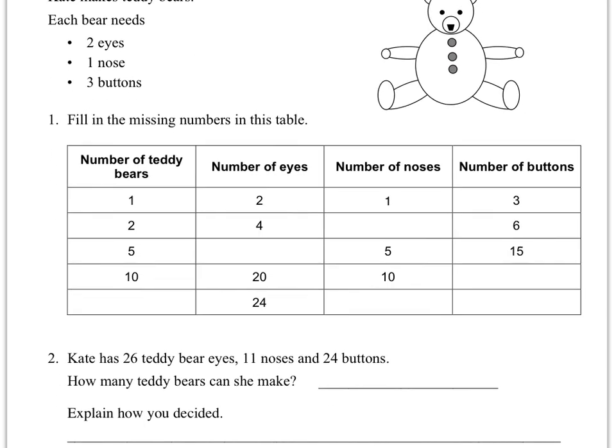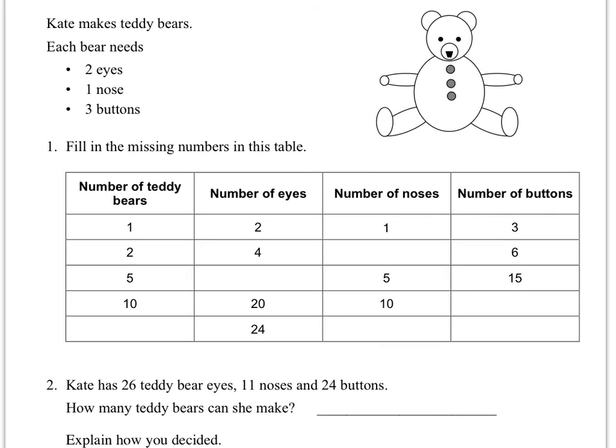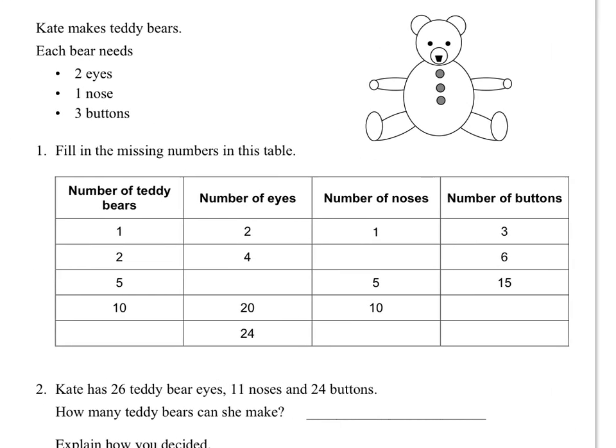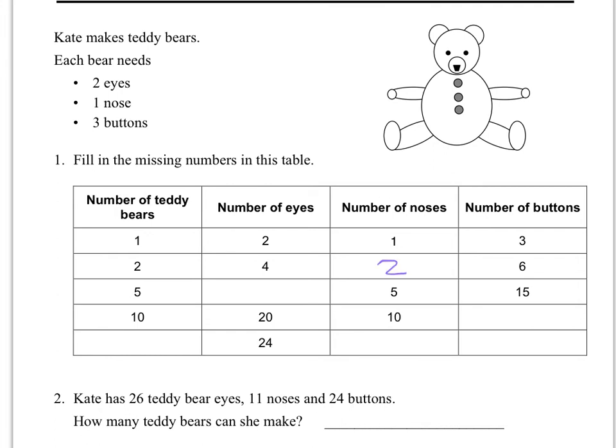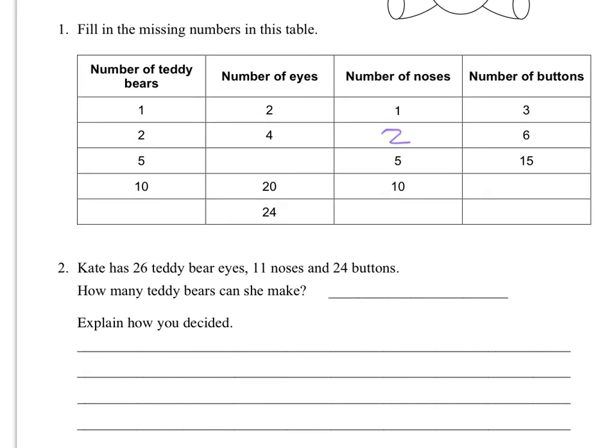Fill in the missing numbers on this table. You're going to figure out if you have 2 teddy bears, how many noses will you have? Well, each teddy bear has 1 nose, so in theory you should have 2 noses. You're going to continue this. If you have 5 teddy bears, how many eyes? If you have 10 teddy bears, how many buttons? If you know you have 24 eyes, how many teddy bears do you have? From there you should be able to figure out how many noses and how many buttons.